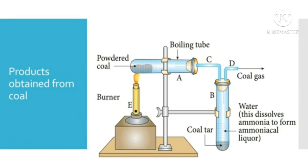The destructive distillation of coal can be carried out in the laboratory. Finely powdered coal is taken in a test tube and heated. At a particular temperature, coal breaks down to produce coke, coal tar, ammonia and coal gas. Coal tar is deposited at the bottom of the second test tube and coal gas escapes out through the side tube. The ammonia produced is absorbed in water, forming ammonium hydroxide. Finally, a black residue called coke is left in the first tube.